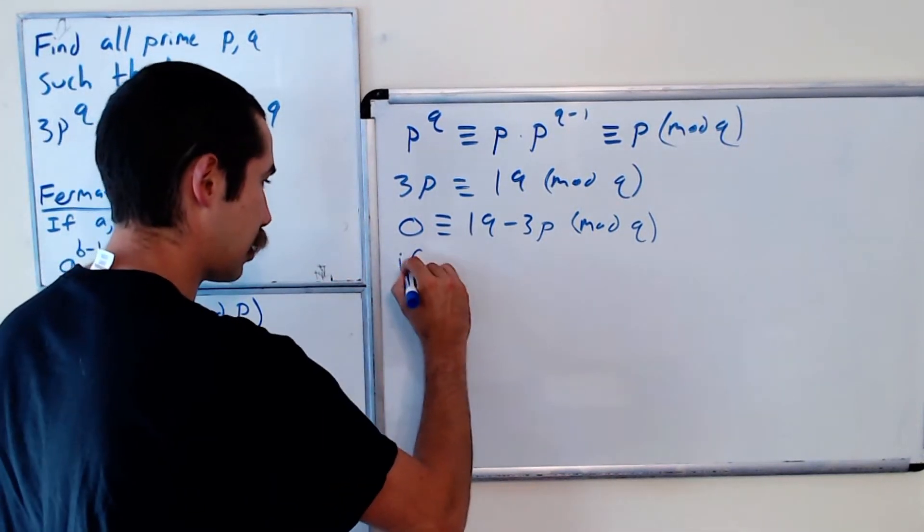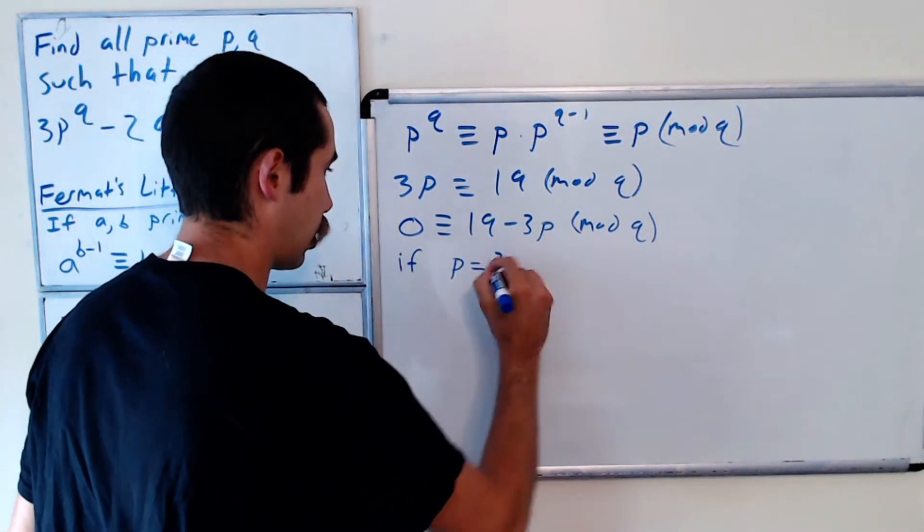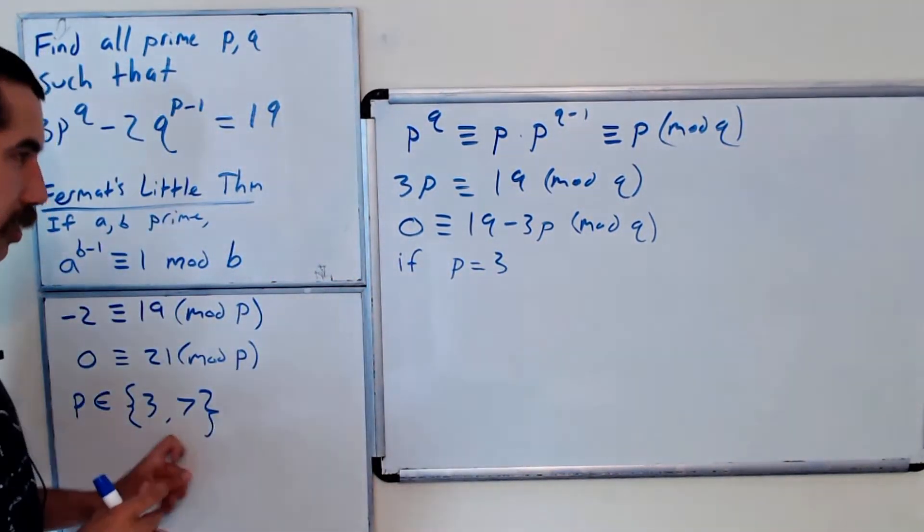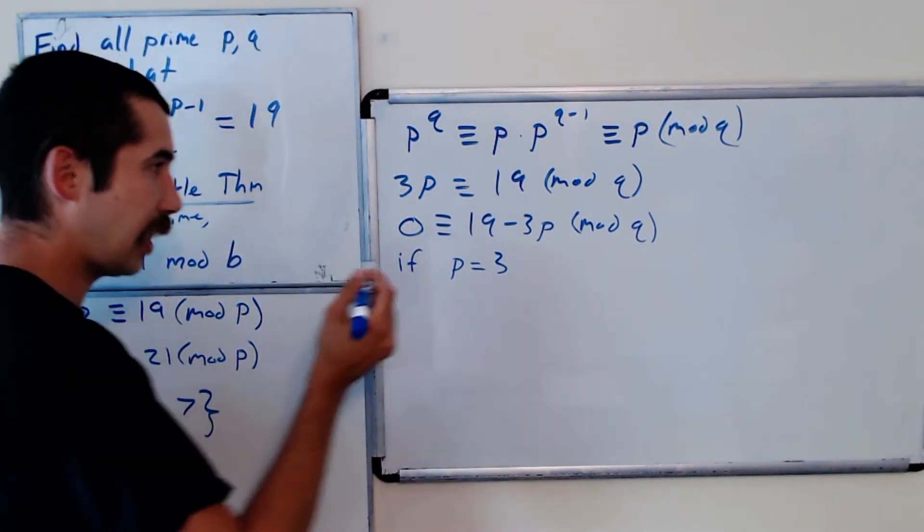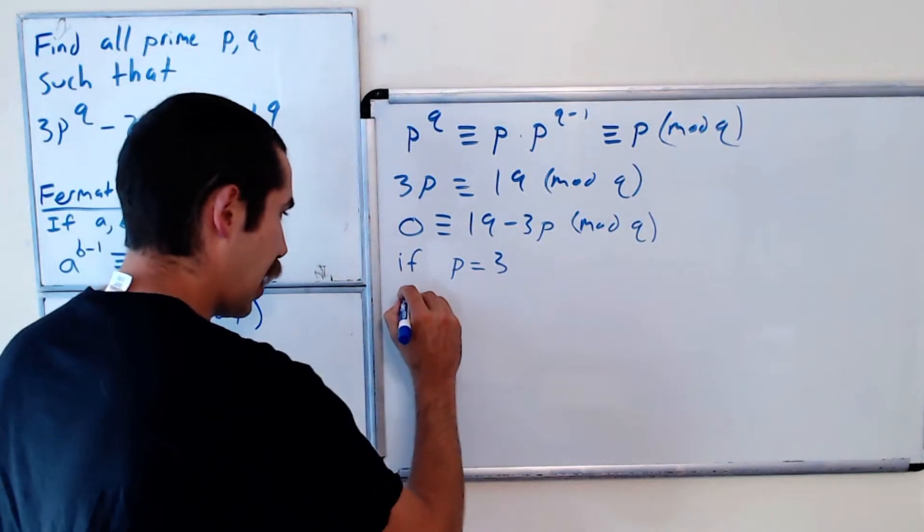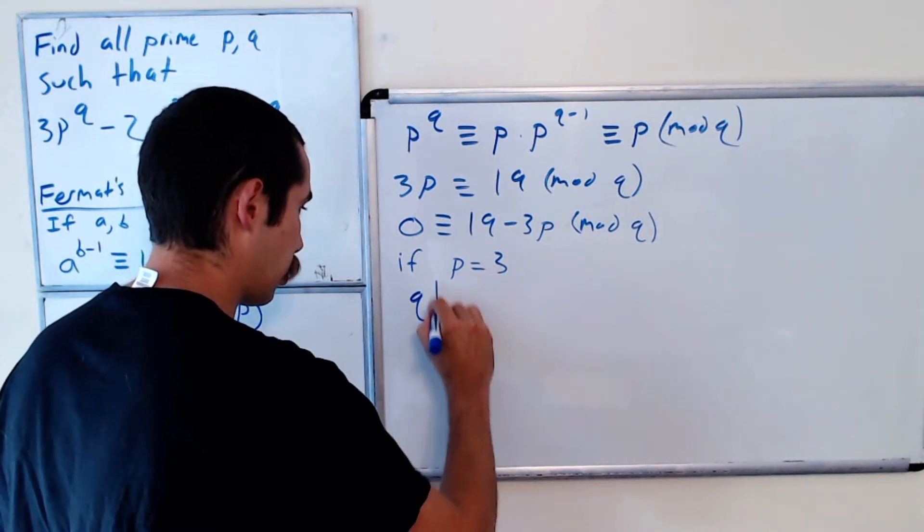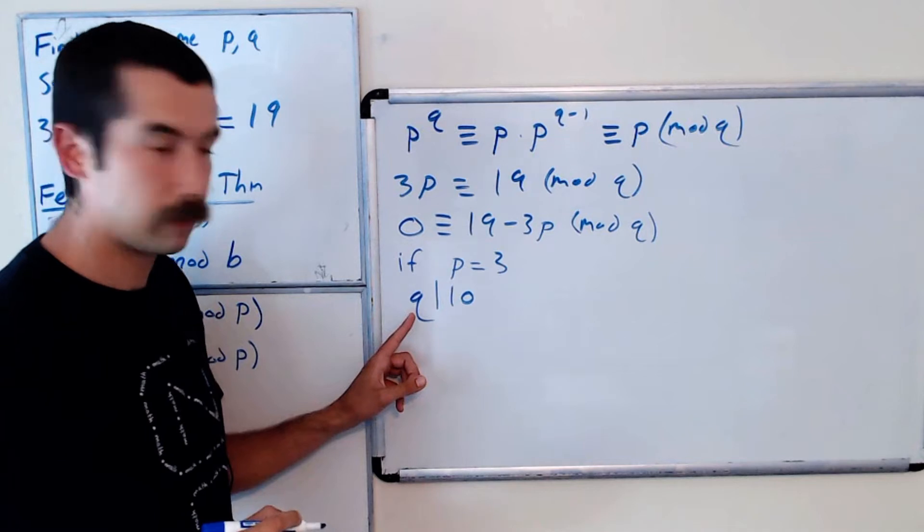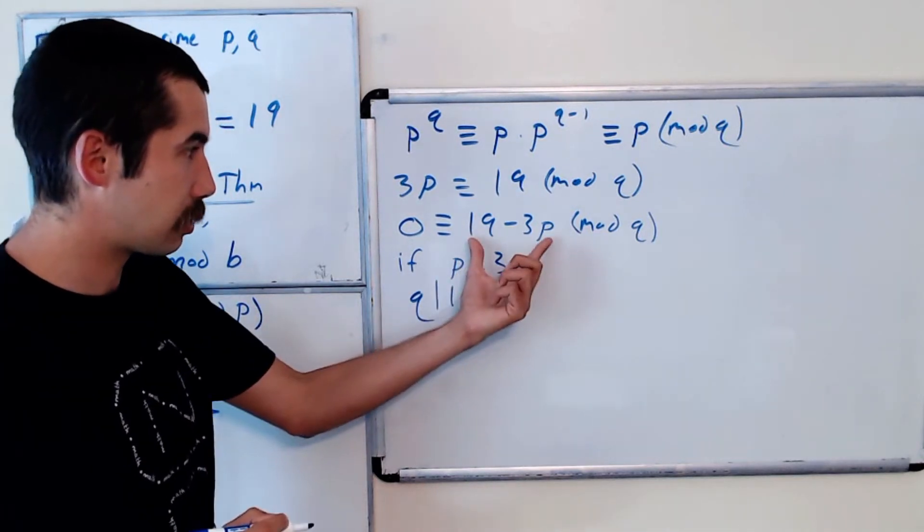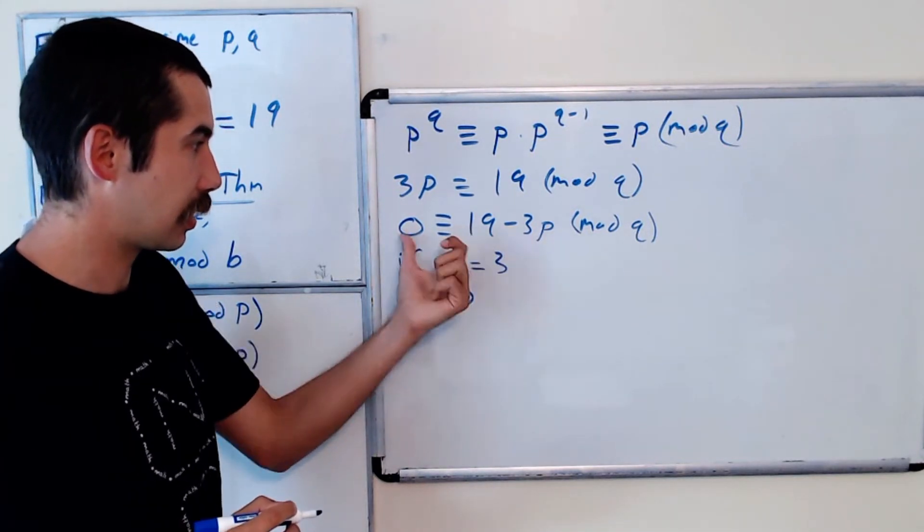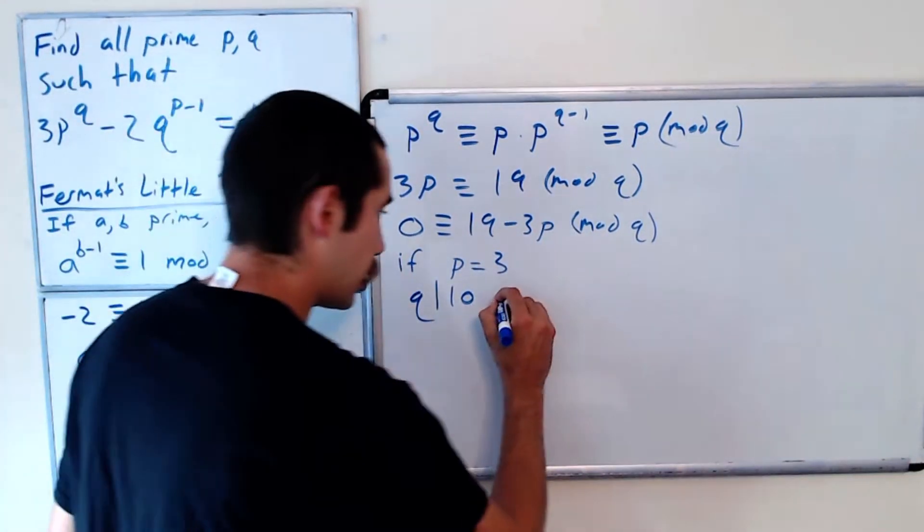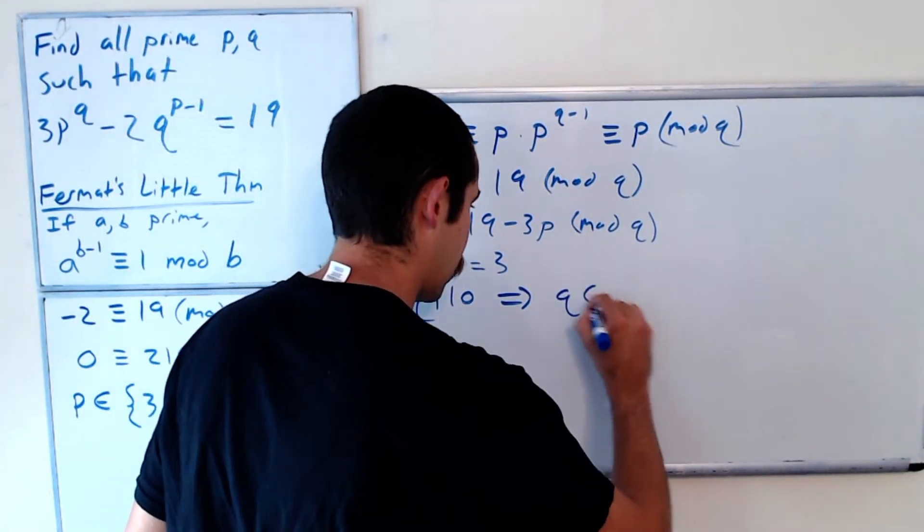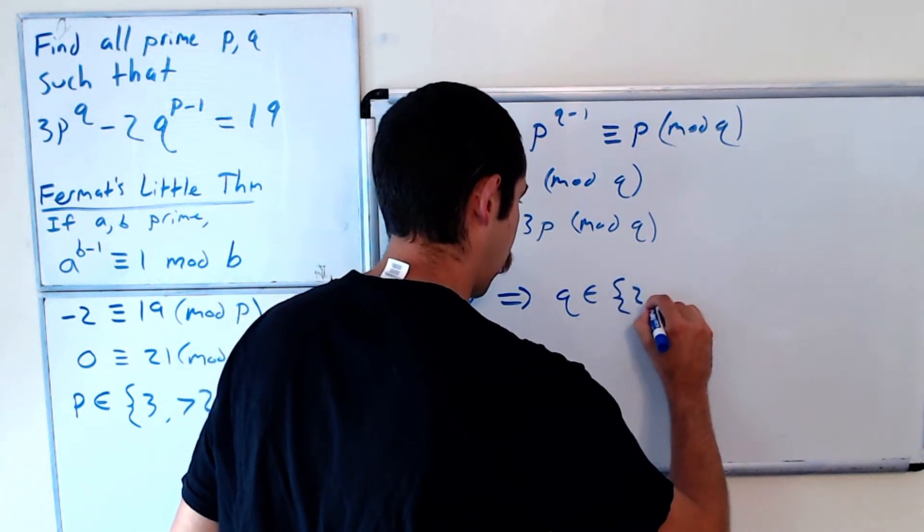So if p equals 3, we have the two options, 3 and 7. If p equals 3, then 10 is divisible by q. Right, this side would be 10, and saying 10 is 0 mod q, so q divides 10, which tells us that q is an element of the set {2, 5}.